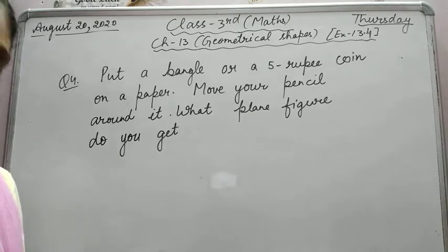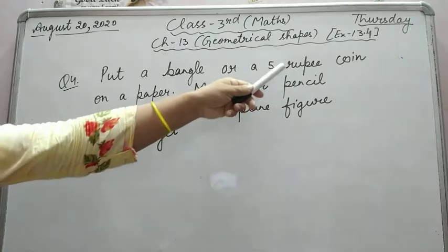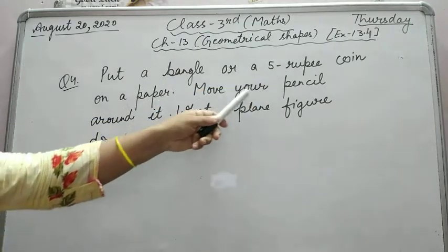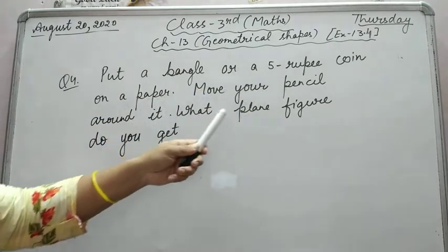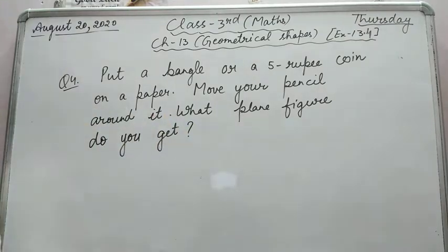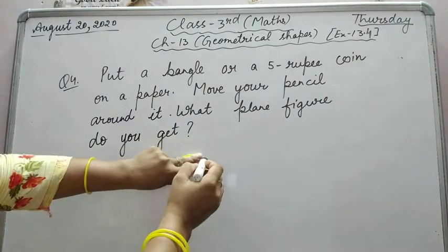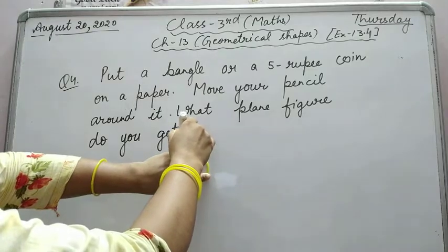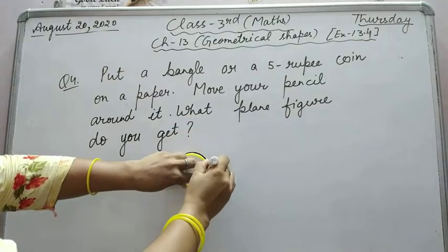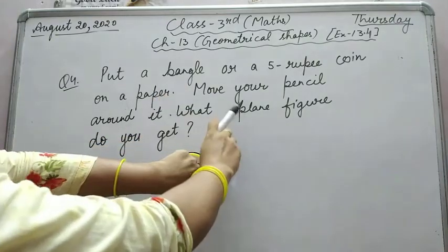Last question of the exercise: put a bangle or a five rupees coin on a paper, move your pencil around it, and what plane figure do you get? First, I'm taking a bangle. You can take a bangle, a five rupees coin, or any bangle. Around it, you have to trace with a pencil.